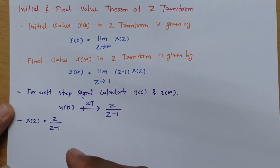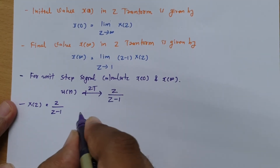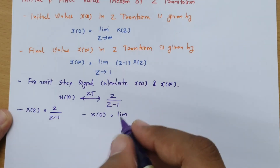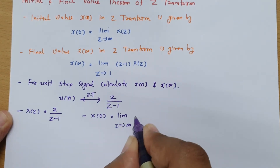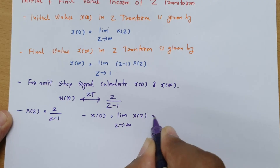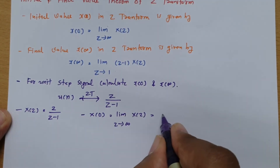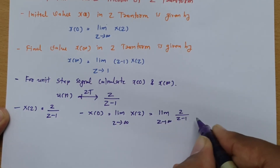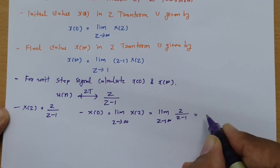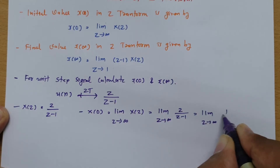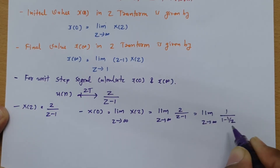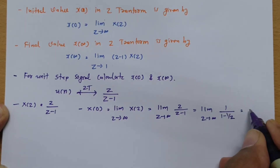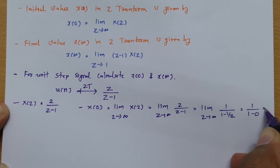Now, to calculate the initial value, X(0) = lim(Z→∞) X(Z) as per the basic formula. Placing X(Z) = Z/(Z−1), we get lim(Z→∞) of 1 / (1 − 1/Z). As Z→∞, 1/Z → 0, so this becomes 1 / (1 − 0) = 1.